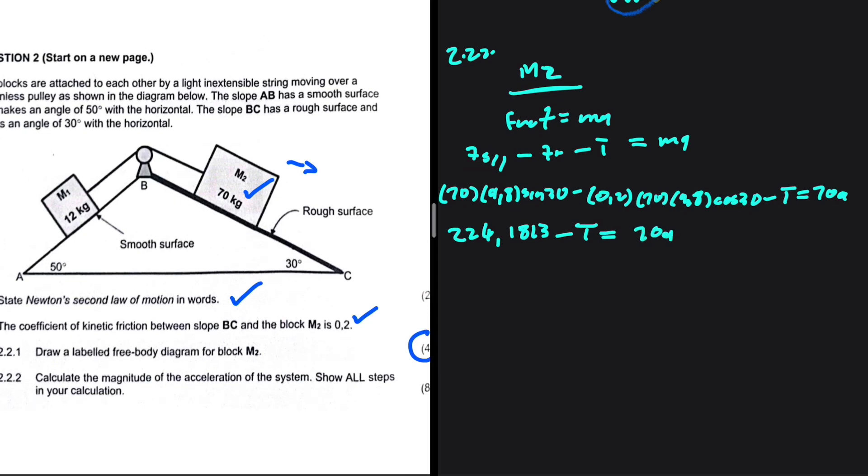As you can see, we have two variables but one equation. We need two equations. Let's name this equation 1 and set up our equation 2. We're going to find equation 2 using M1.